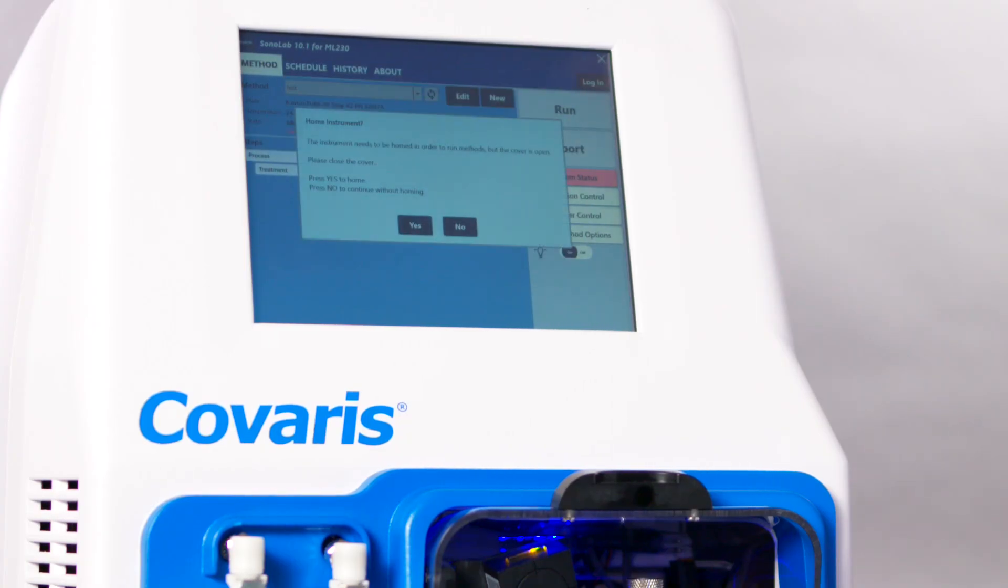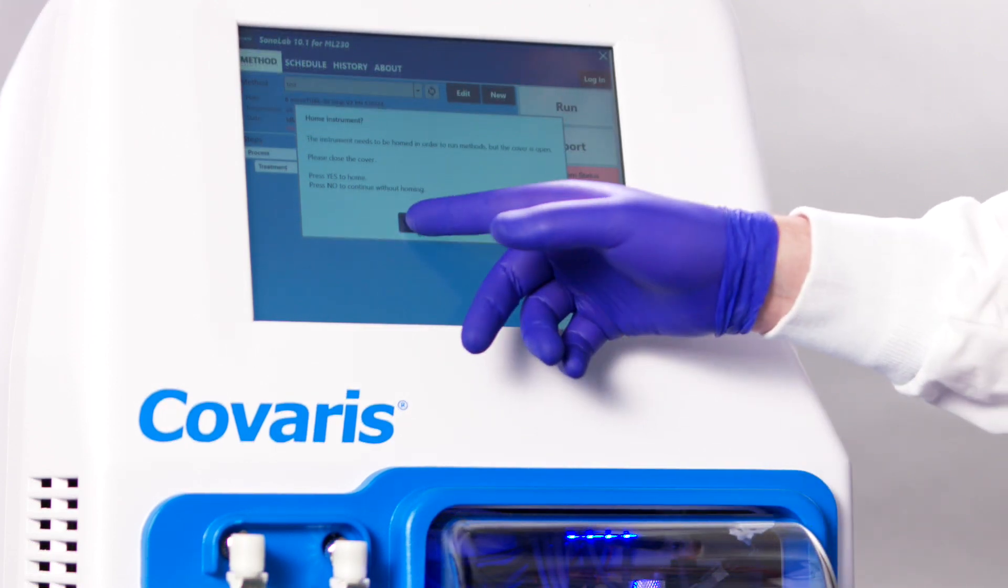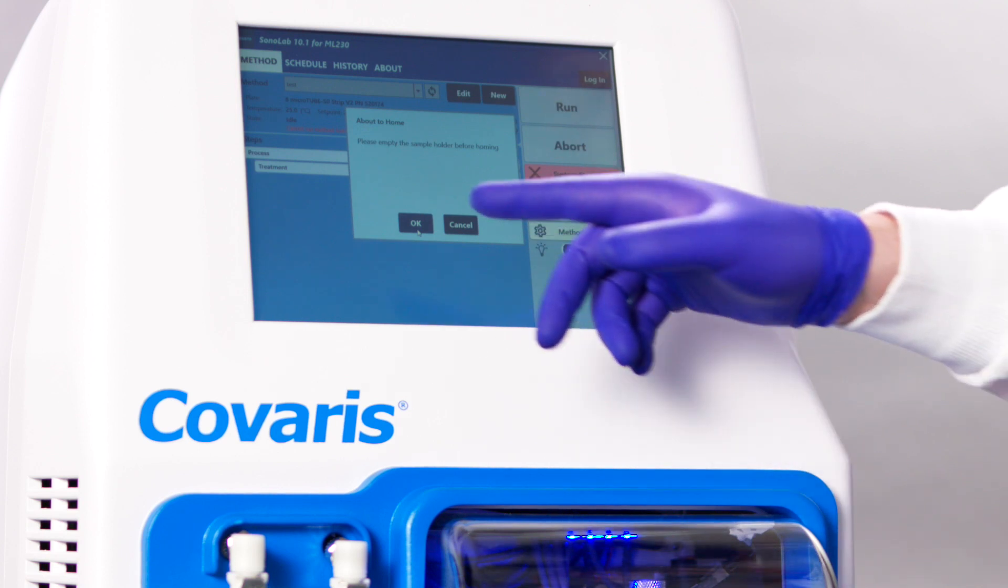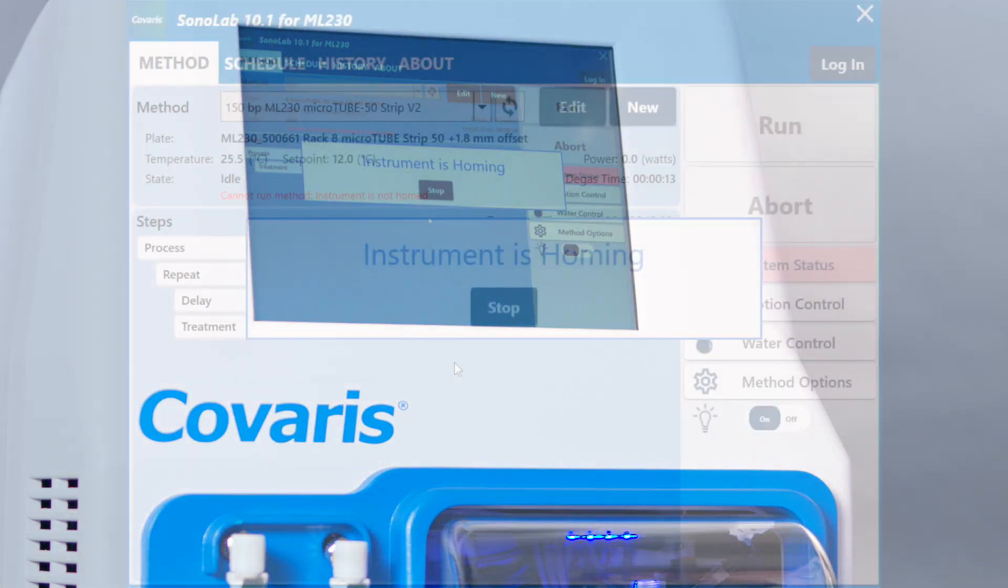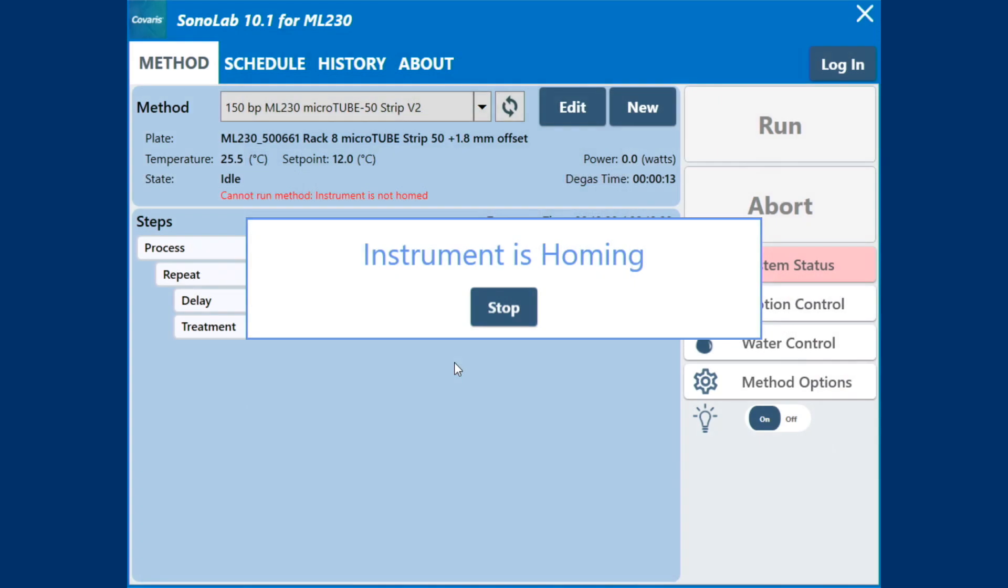Sonolab will automatically open and a window will appear asking whether the instrument is to be homed. Touch Yes to confirm there are no items on the sample arm. The motion system will perform its initialization sequence. The homing window will close and the Sonolab home screen will be displayed.